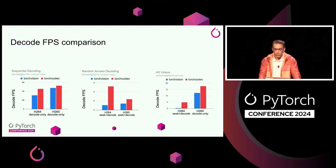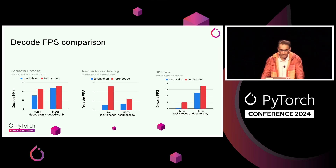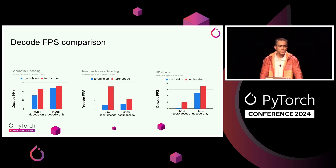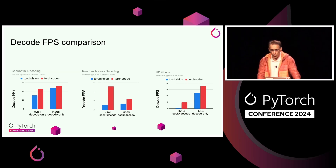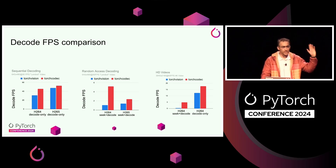Here are some micro benchmarks showing TorchVision versus TorchCodec decode performance on a single machine. The left chart shows sequential frame decoding; the middle shows random access decoding — seeking plus decoding; and the right shows decoding on a 4K video. There are three takeaways: first, decode performance can depend highly on encoding format and parameters like resolution or H.264 versus H.265. Second, sequential decoding is much faster than random access decoding. Third, TorchCodec is faster than TorchVision in almost all scenarios.